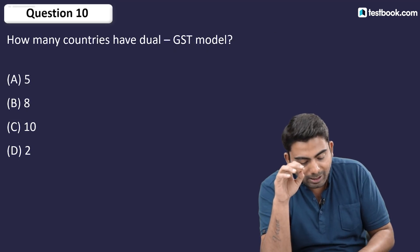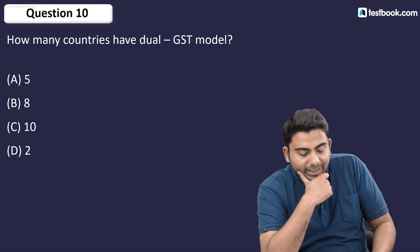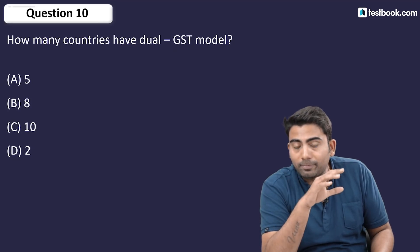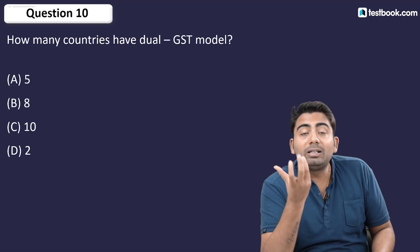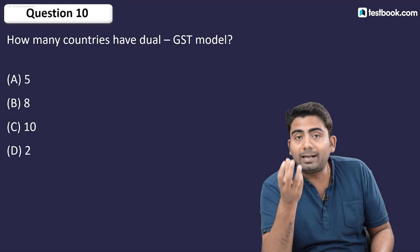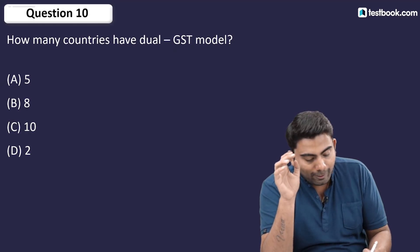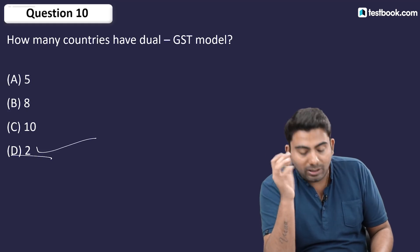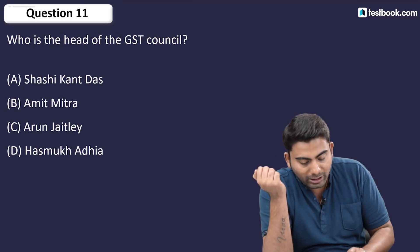Question number 10: How many countries have the dual GST model? We have studied this — GST was copied from Canada, and Canada also has a dual model. India also has a dual model, so the answer is option D — 2 countries have a dual model GST.